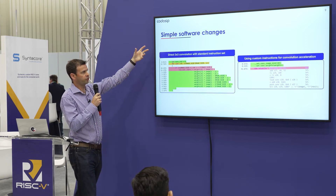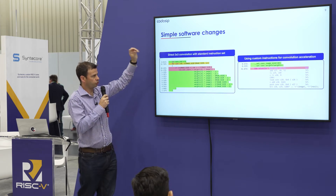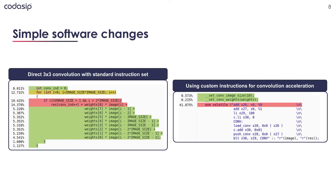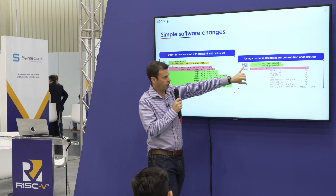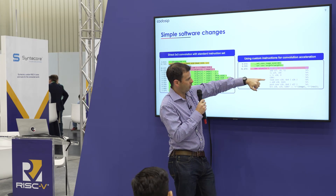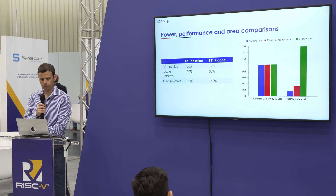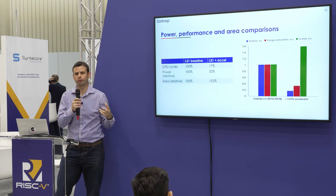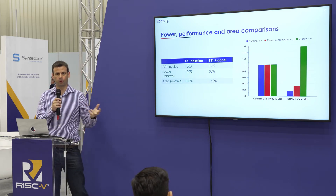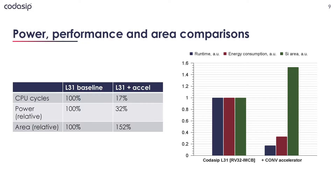When it comes to the software side, looking at a 3x3 convolution as a more complex example — this is typically what it would look like in C. Because this is a more complex operation, the compiler can't automatically recognize it. But we can quite simply, using some relatively simple inline assembler, apply our load-conv instruction and our push-conv instruction to perform that convolution operation.